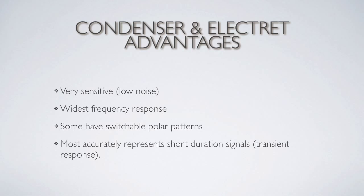Condensers most accurately represent short-duration transient signals — though this is really only true when the diaphragm is relatively small. As you create a larger diaphragm, it has more mass and transient response suffers somewhat. You'll get the best transient response from condensers that have a very small capsule or diaphragm because it can move more quickly.